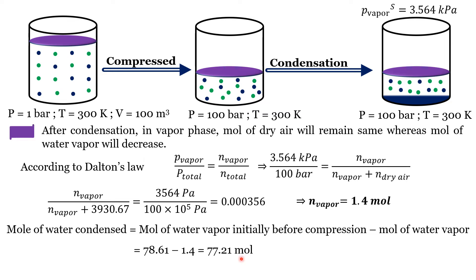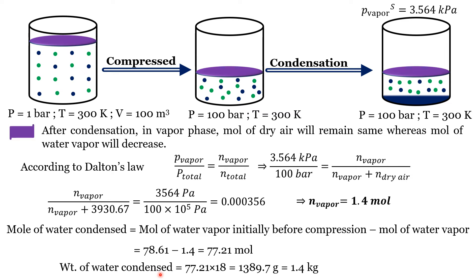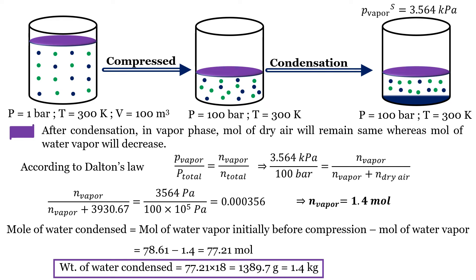Moles of water condensed equals initial moles of water vapor before compression minus moles of water vapor remaining in vapor state after condensation, giving 77.21 moles condensed. Multiplying by the molecular weight of water, the weight of water condensed equals 1.4 kg.